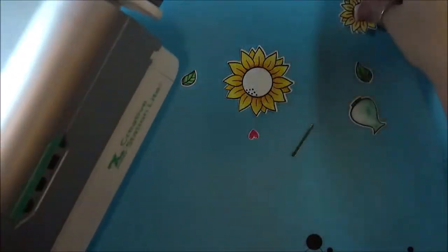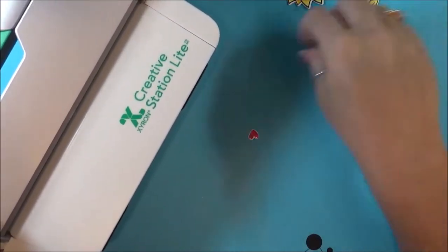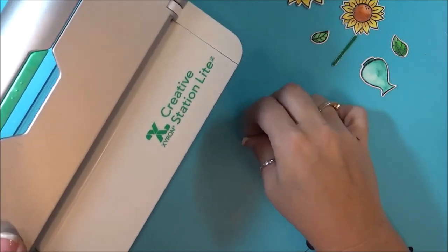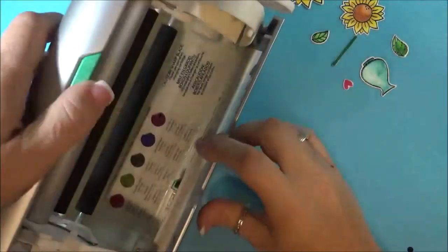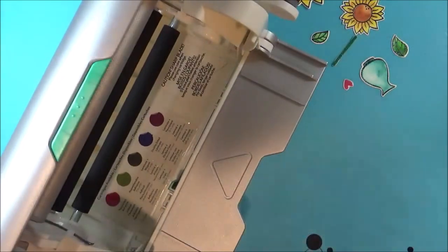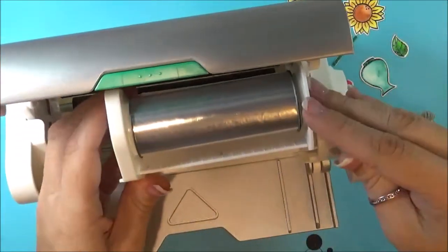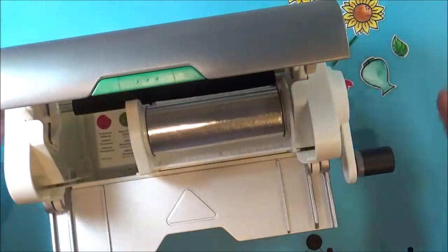Okay, so all of these little die cuts that I have out, I am going to run through my creative station light so I can get some adhesive on it. Let's see, I don't have my adhesive in there yet, I'm going to use the 3 inch permanent adhesive roll. Okay, so I'm just going to slide this right in there, just like that.